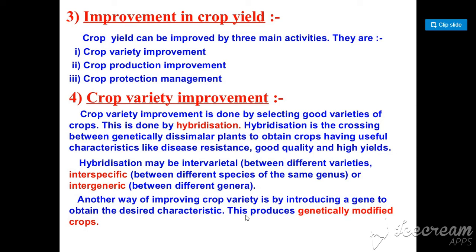Crop variety improvement means that the farmer focuses on good quality seeds. For example, if you think about two plants, A and B, where plant A's growth is very good — the idea is to select and develop seeds from the better-performing plant to improve overall crop yield.